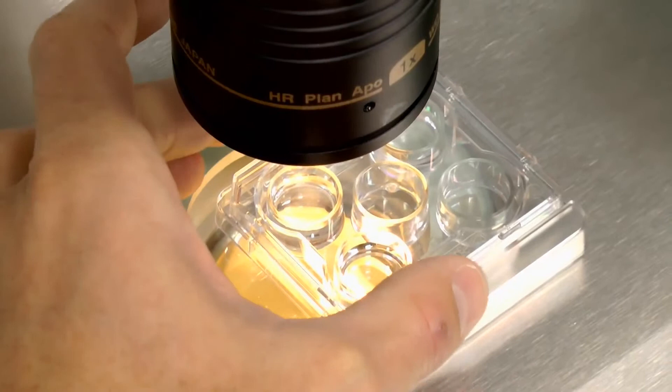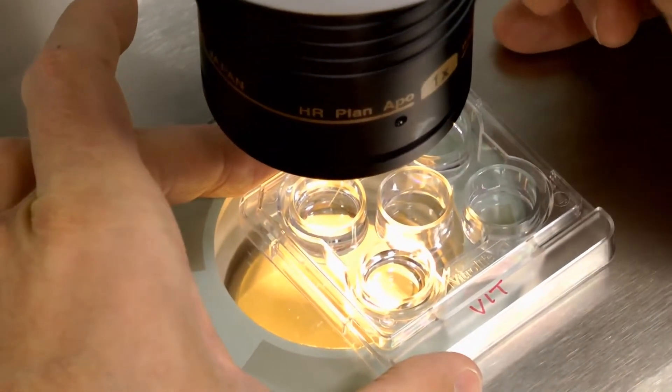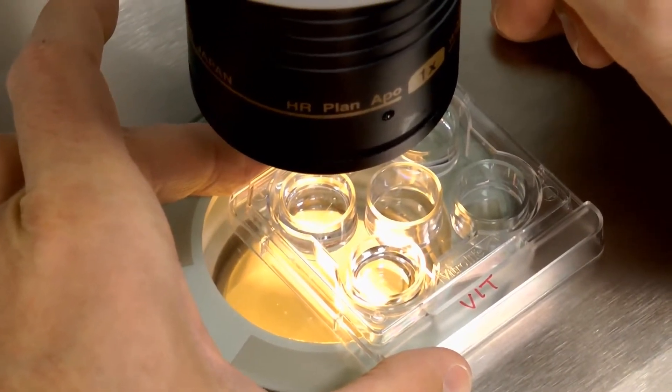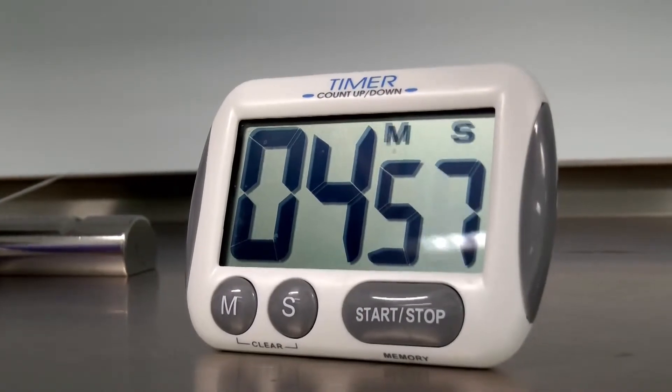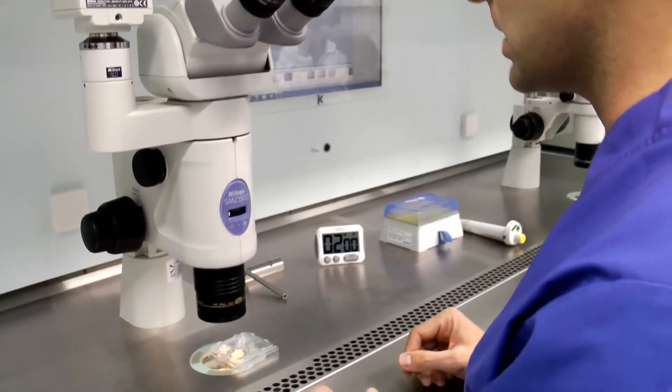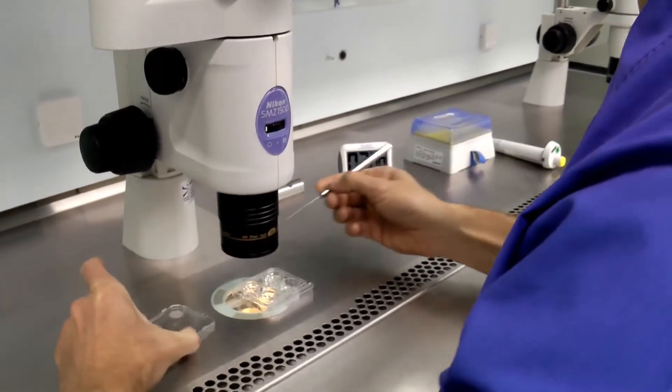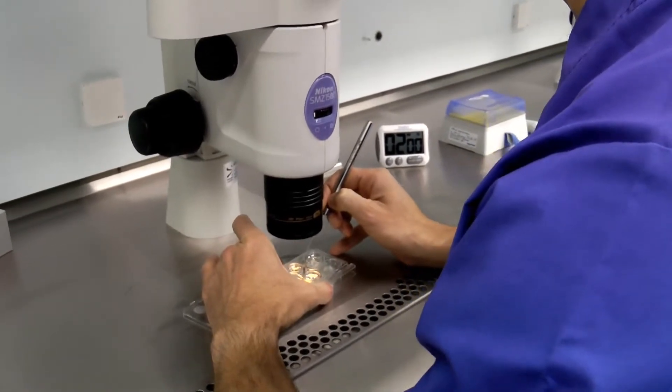During the first step, you take the embryos from your culture dish and move them into the first solution and leave them there for five minutes. During the second step, the embryos are moved from the first solution to the second solution and remain in the second solution for two minutes.